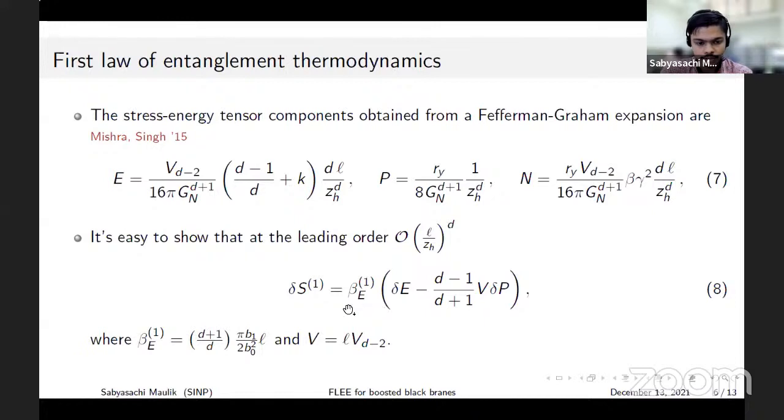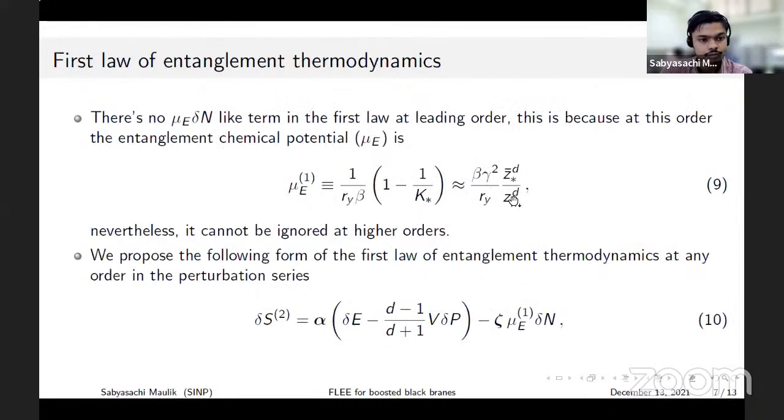The quantity beta_E^(1) is the inverse of the entanglement temperature and as expected beta is proportional to L. However we note that at the leading order there is no contribution from the chemical potential conjugate to the boost momentum. Why is it so? We define our chemical potential as the value of the Kaluza-Klein gauge field evaluated at the turning point of the extremal surface.